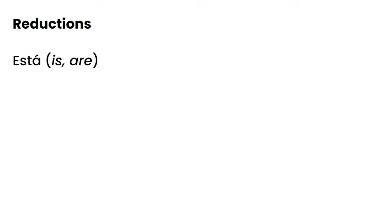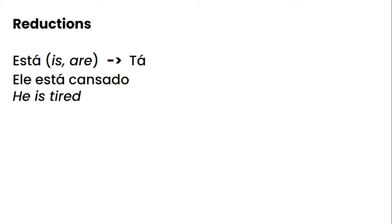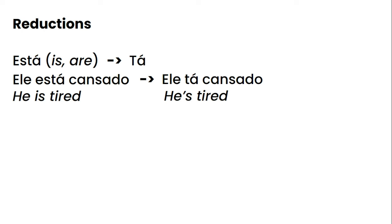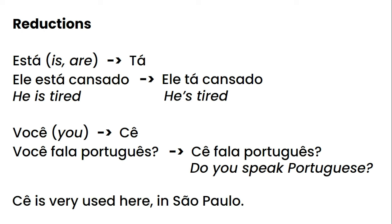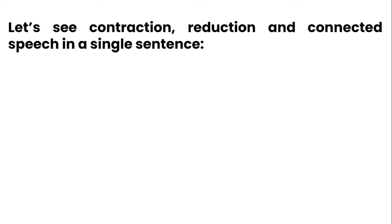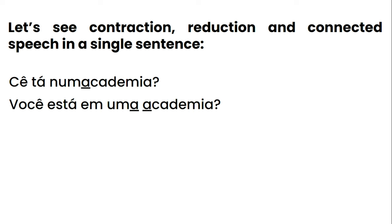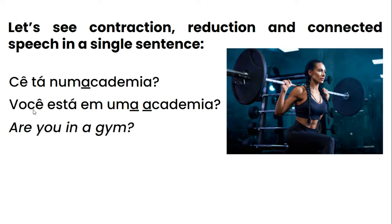Now some reductions. 'Está' becomes 'tá' — for example, 'Ele está cansado' becomes 'Ele tá cansado.' 'Você' is reduced to 'cê' — 'Você fala português?' becomes 'Cê fala português?' This reduction 'cê' is very common in São Paulo. Now let's see contraction, reduction, and connected speech in a single sentence: 'Você está em uma academia?' becomes 'Cê tá numa academia?' Here, 'cê' is the reduction of 'você,' 'tá' is the reduction of 'está,' and 'numa' is the contraction of 'em' and 'uma.'